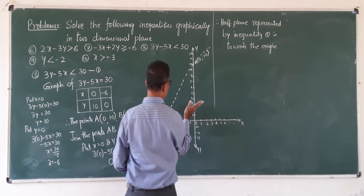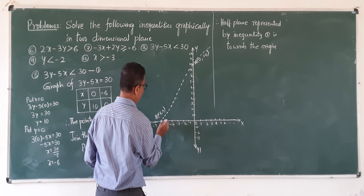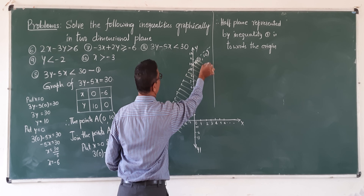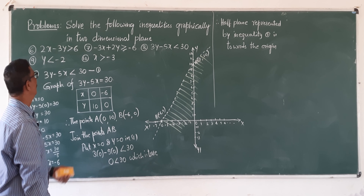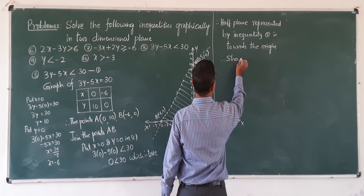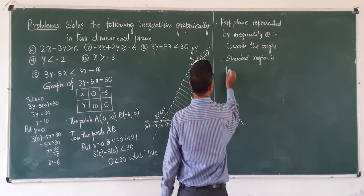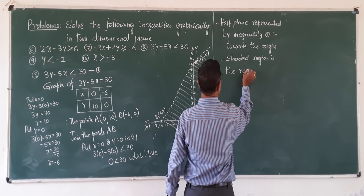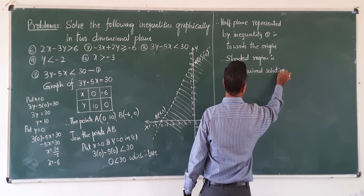If it satisfies, shade towards the origin. If it does not satisfy, away from the origin. It satisfies, so towards the origin. This is problem number 8. Therefore, the shaded region is the required solution of the given inequality.